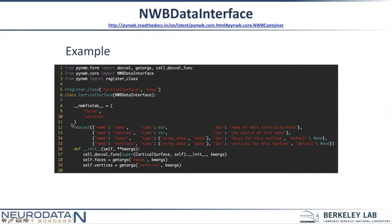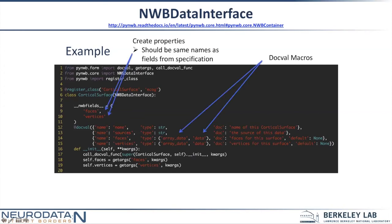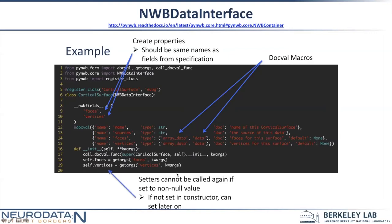Using __nwbfields__ auto-generates some properties of this class. In the constructor method, we pass in the name — which is a requirement of an NWBContainer — and then the faces and vertices arguments. One thing to know is that the docval decorator can use macros. This says that faces can come in as any form of array data — a list or a numpy array — and data specifies that it can be any sort of numerical value.